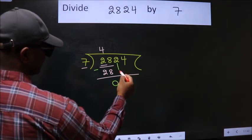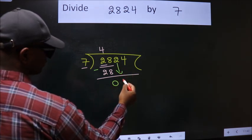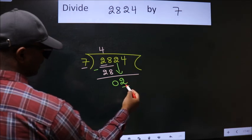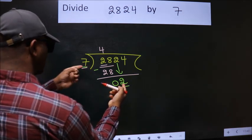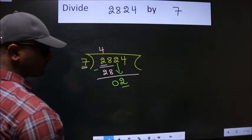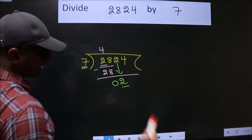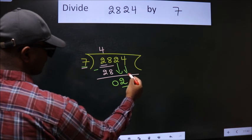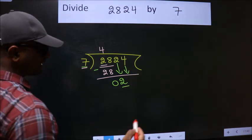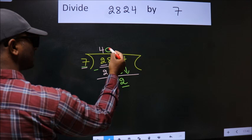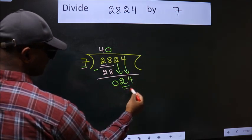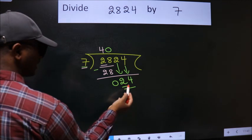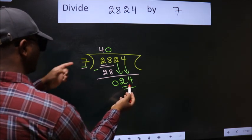After this, bring down the beside number, so 2 down. Here we have 2. 7 into 2 is smaller than 7, so we should bring down the second number. The rule to bring down the second number is: put zero here, then only we can bring down this number. So 24. A number close to 24 in the 7 table...